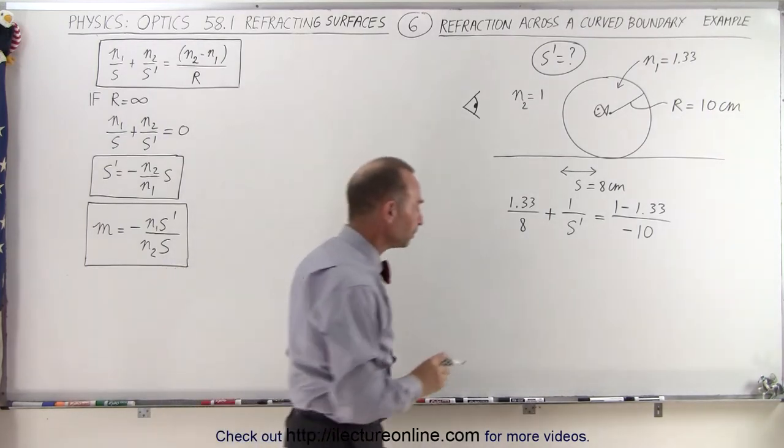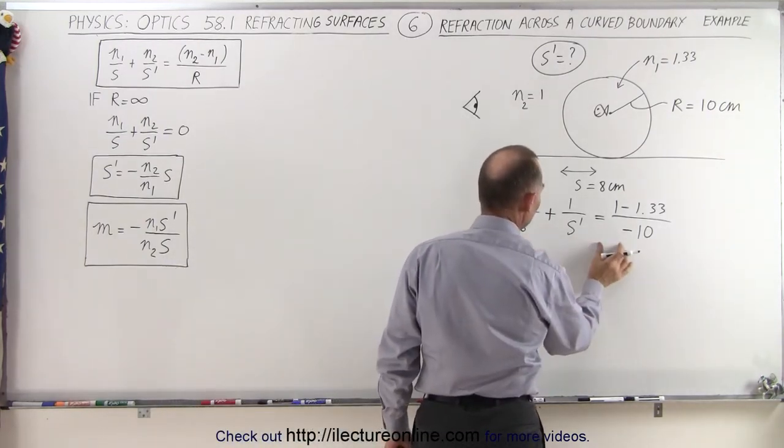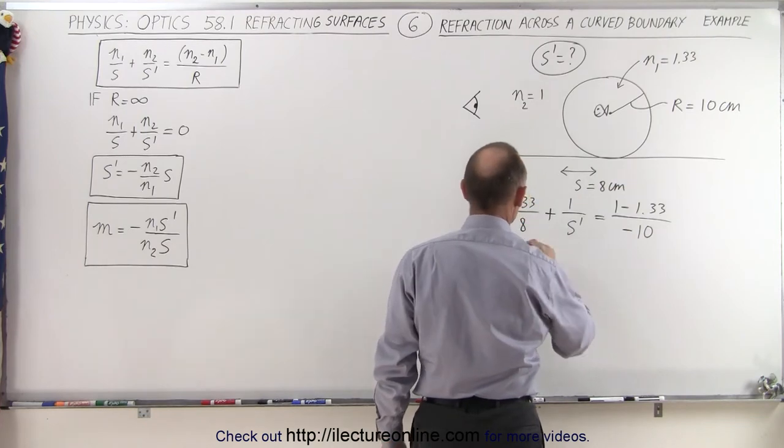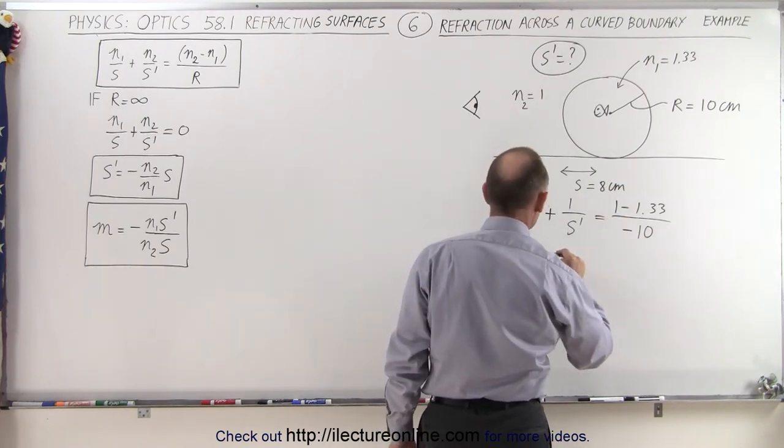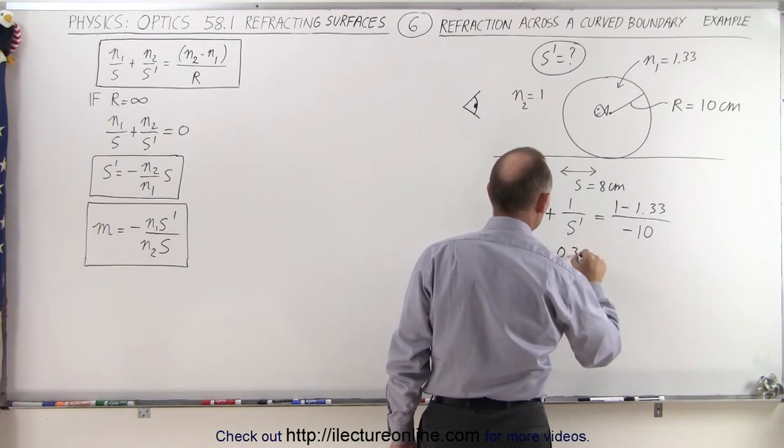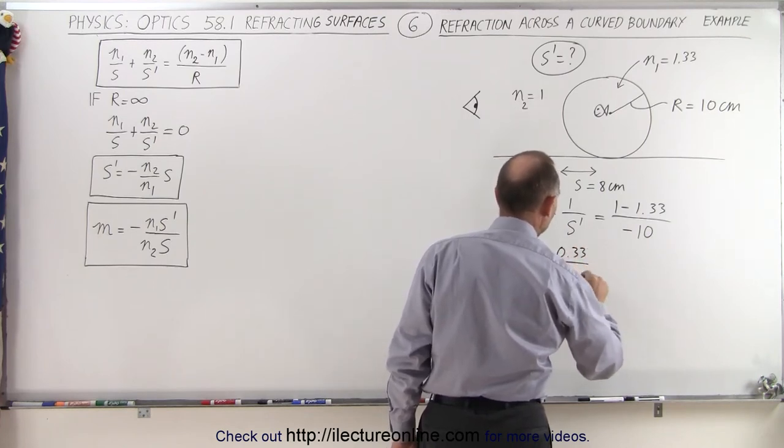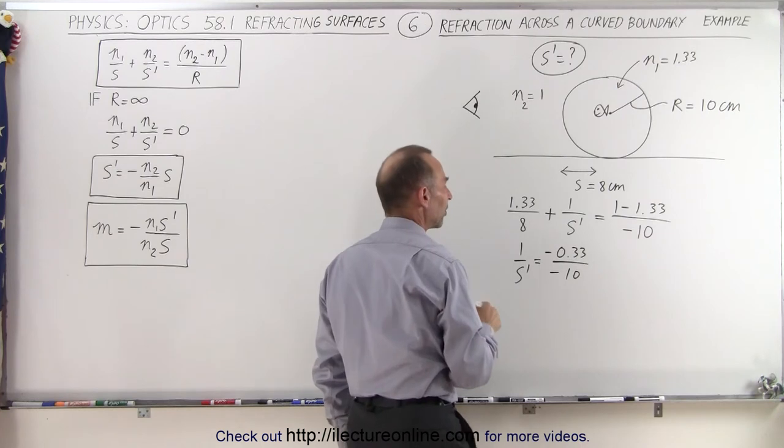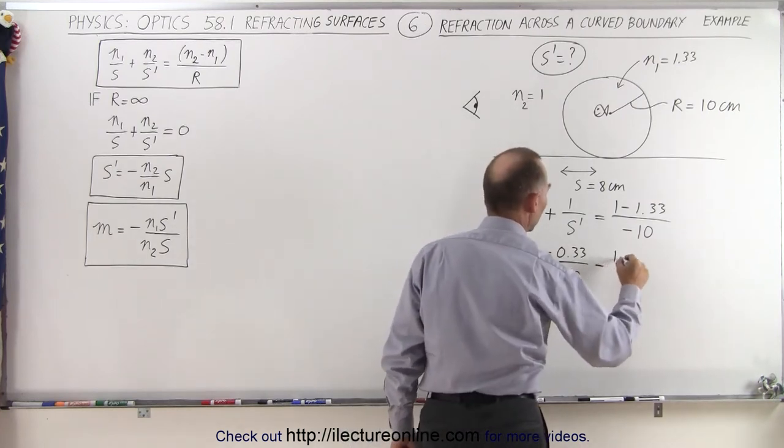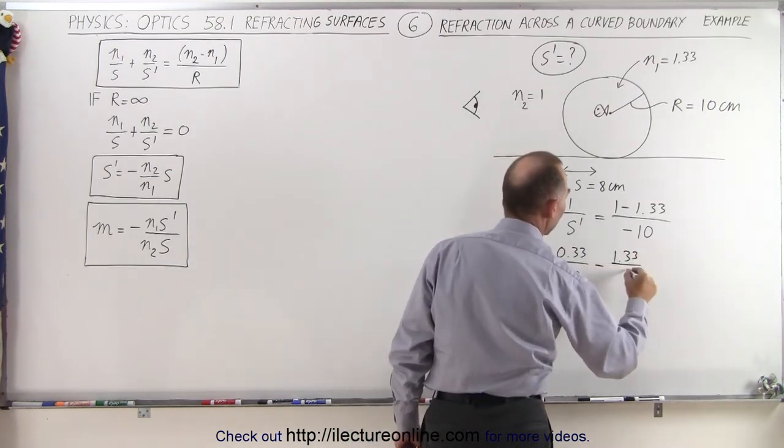All right, now we're ready to find S prime. Moving this to the other side, simplifying this, we get 1 over S prime is equal to 1 minus 1.33 is minus 0.33 divided by minus 10. So it looks like the negatives will cancel out, and then minus 1.33 divided by 8.